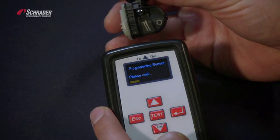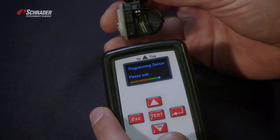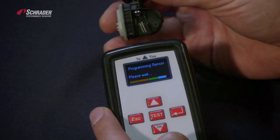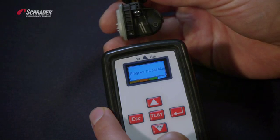As you can see, it's scrolling across the screen. We're copying the OE sensor using the Schrader 33500. We've just now demonstrated how to copy the OE sensor using the Schrader 21230 tool.